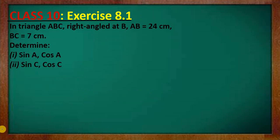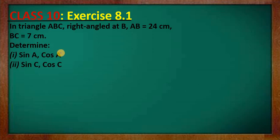The question reads: in triangle ABC, right-angled at B, side AB is equal to 24 cm and side BC equals 7 cm. We're asked to determine the sine of A, the cosine of A, the sine of C, and the cosine of C.